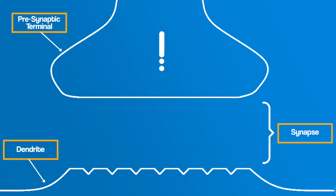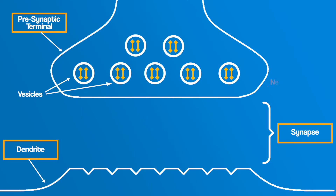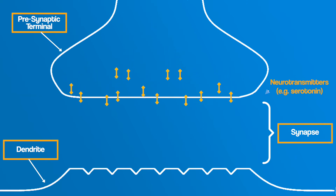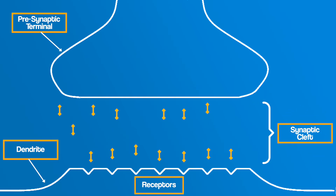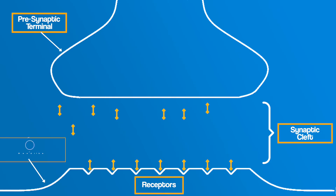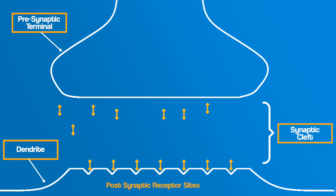When the impulse reaches the end of the axon it arrives at the pre-synaptic terminal — 'pre' meaning before the synapse. These are made up of small structures called vesicles and contain neurotransmitters. The electrical impulse that has travelled down the axon triggers the release of the neurotransmitter, which then diffuses across the synapse, also known as the synaptic cleft. These neurotransmitters are received by receptors on the dendrites of the next neuron, specifically known as post-synaptic receptor sites.